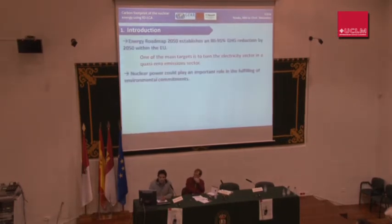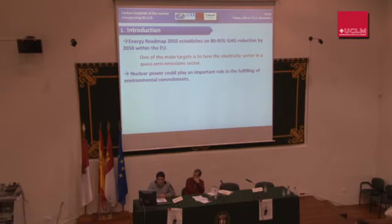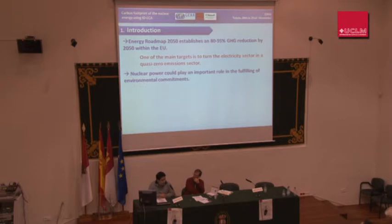About the introduction: the Energy Roadmap for 2050 establishes an 80 to 95 percent reduction of carbon dioxide emissions in the European Union. One of the main targets of this policy is to turn the electricity sector into a quasi-zero emission sector. Obviously, this is an ambitious policy and an ambitious goal for the future.